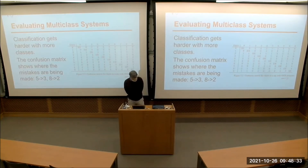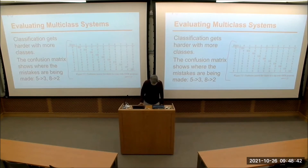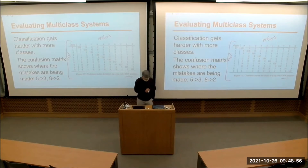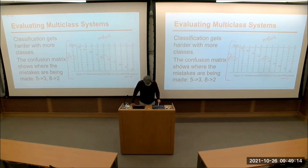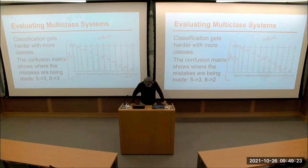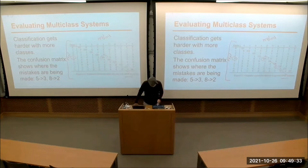So how do you evaluate multi-class systems? One thing that is very good is to build a confusion matrix. On one side is the real label and on the other side is the predicted label. It shows how often examples that really were a 'four' got predicted as a 'four.' You're hoping that the numbers lie on the main diagonal — those are the right predictions. The more weight on the main diagonal, the better off you are.